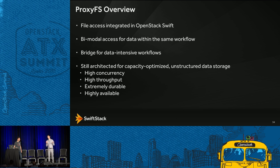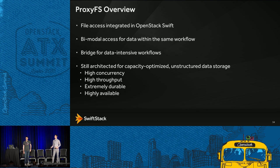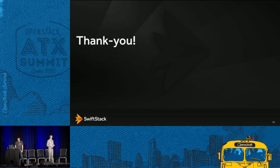In summary: ProxyFS is file access integrated into OpenStack Swift. The goal is bimodal access for data within the same workflow — a bridge for data-intensive workloads that lets teams continue using file system access for existing applications and tools, while also building new object-API-based applications. It's designed for the same workloads Swift is already good at: high concurrency, lots of users, lots of incoming connections, high throughput rates — with the same durability and availability properties.